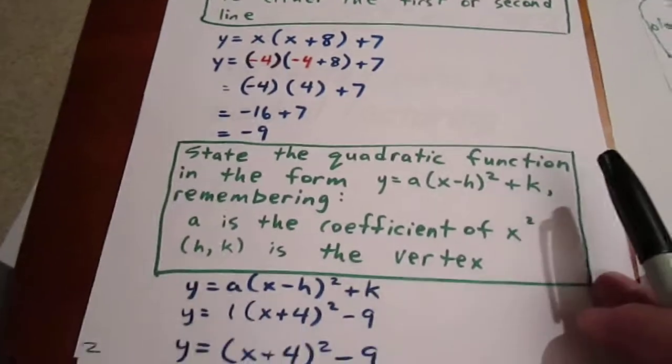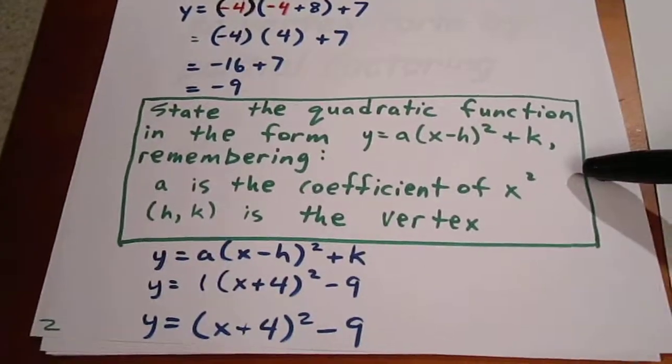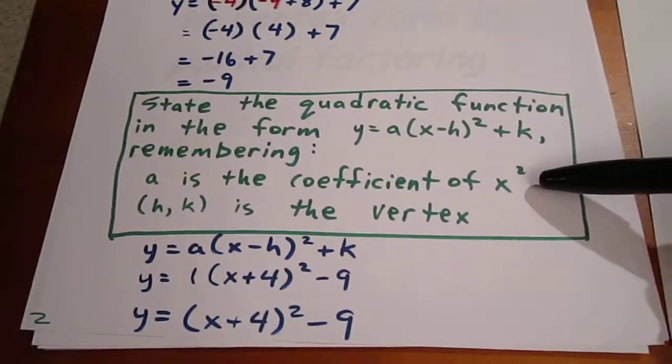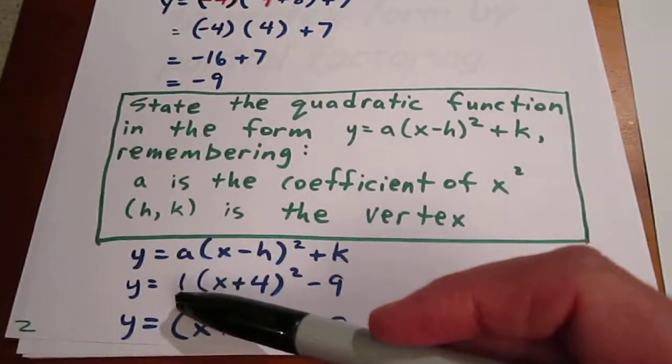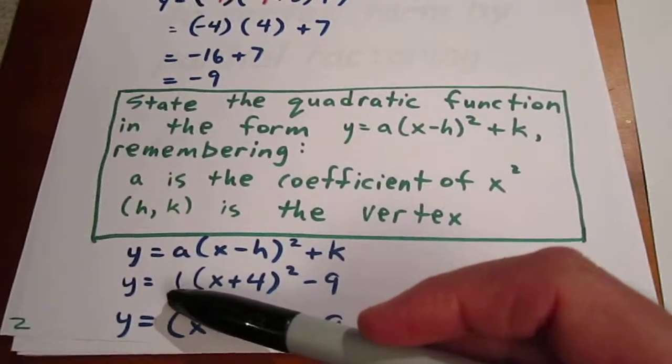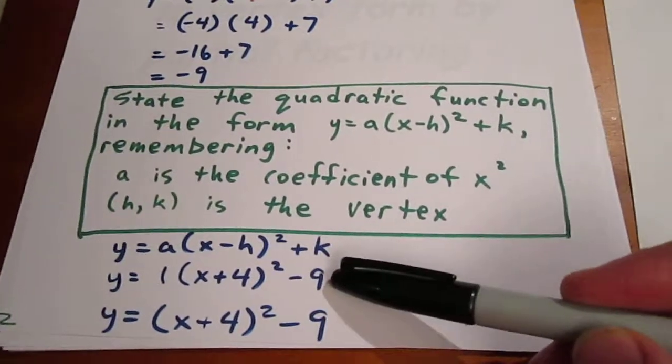We already know our a value because it's the leading coefficient from the start of the question, the coefficient of x squared, which was 1. So our parabola in vertex form is 1 times x plus 4 quantity squared minus 9.